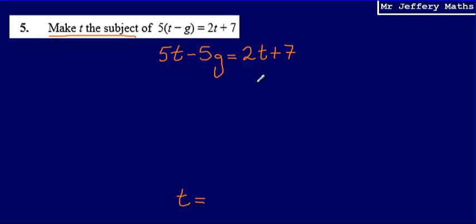Then the next thing that I'm going to do is ideally I want to get all of my t's on one side of the equal sign so that I've got t is equal to something. So the next thing I'm going to do is I'm going to get rid of that 2t by subtracting 2t from both sides. So that leaves me with 5t minus 2t, which gives me 3t. Then, so that's now 3t minus 5g. 5g hasn't changed and that's equal to 7.